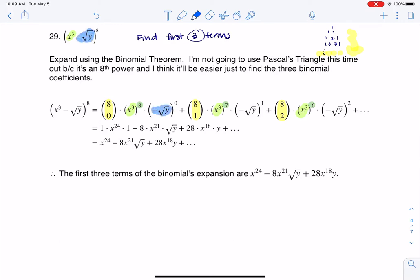The second term in my binomial is negative square root of y. In my expansion, I have negative square root y in each term. But I need to pay attention to the powers—they need to increase. So I go from 0 to 1 to 2.